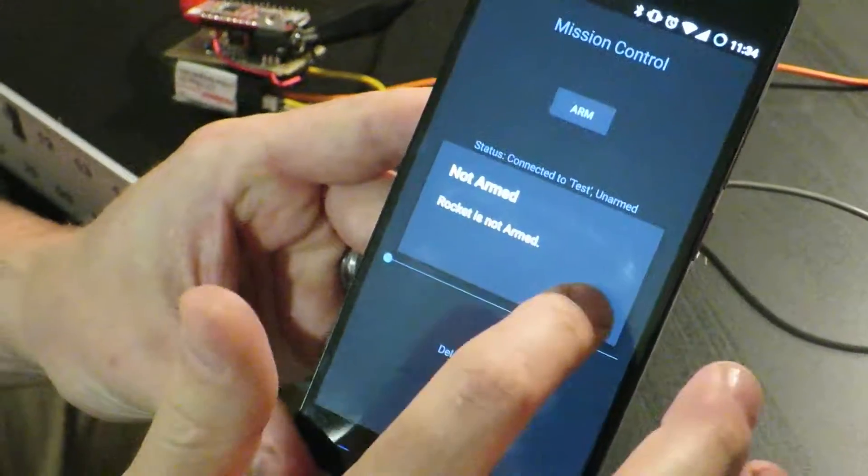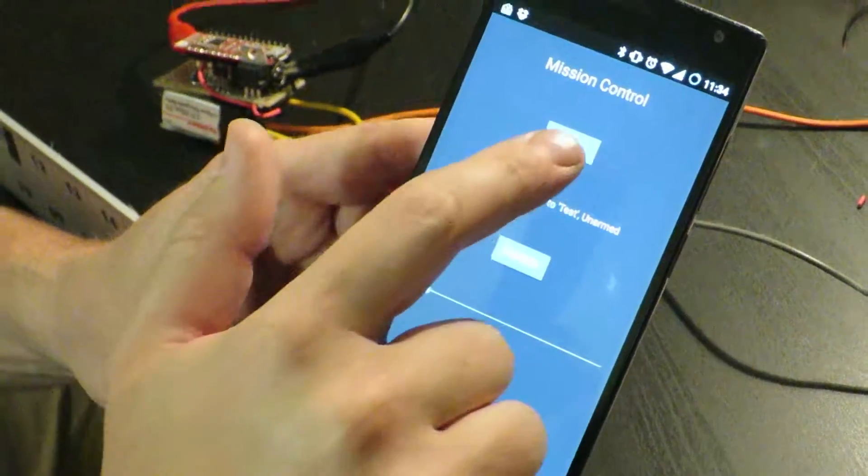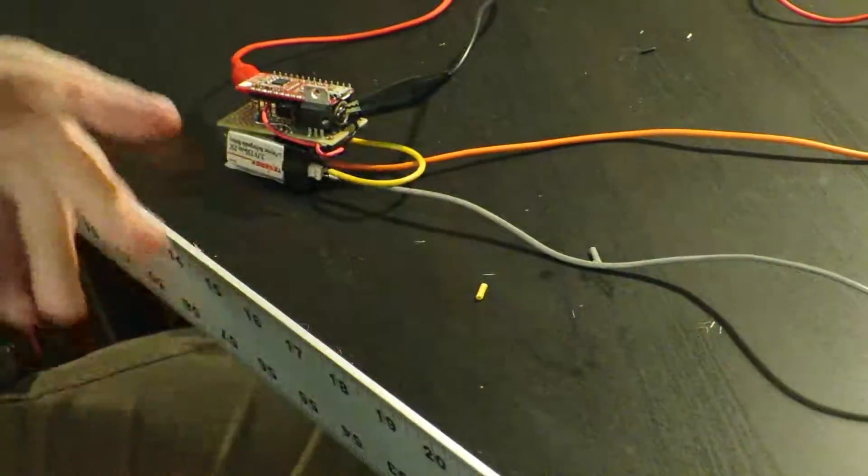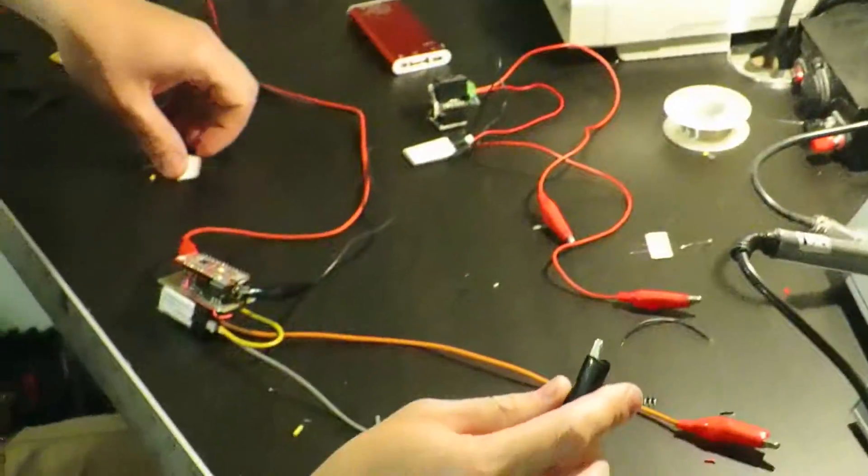If I go to launch without arming it, it'll warn me. I'll set the delay to five seconds, I will arm it, and I will set this up with the new igniter.